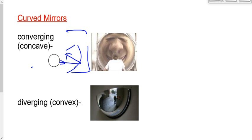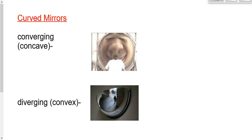Diverging mirrors — convex mirrors, thicker in the middle than at the edges — we tend to see these a little more often. The image characteristics, just like for diverging lenses, will always be virtual, smaller, and upright. Where have you seen a diverging mirror? At convenience stores like 7-Eleven. Sometimes in hallways going around a corner — especially in hospitals, where people come around corners with stretchers and IVs. You can see around the corner because the image produced, although smaller, gives you more field of view.